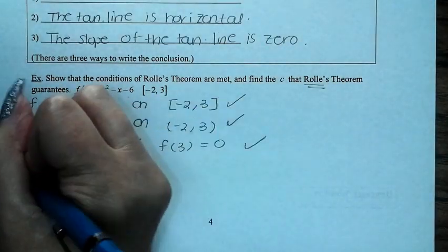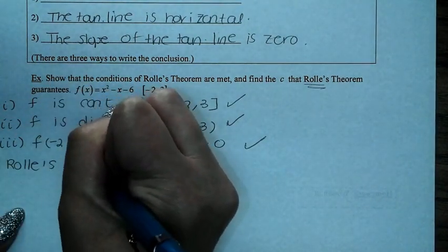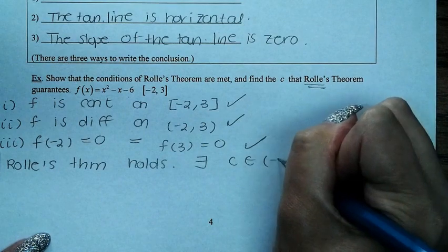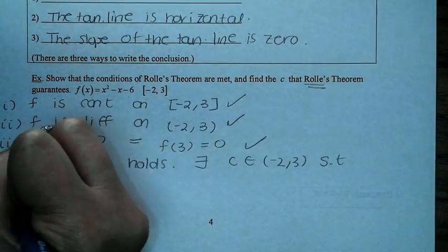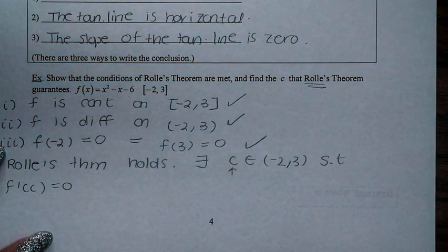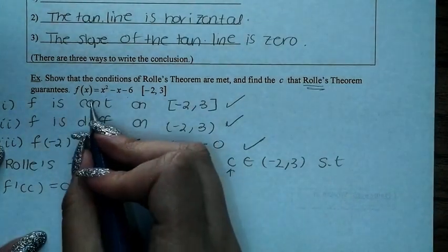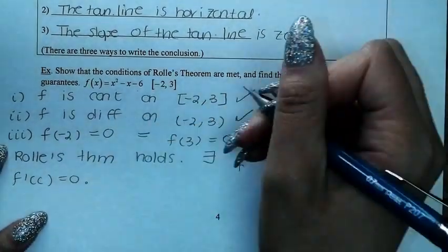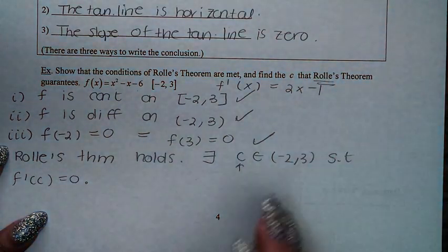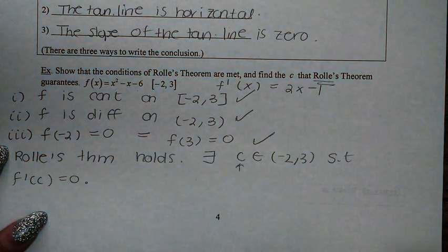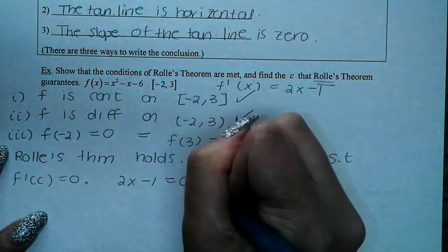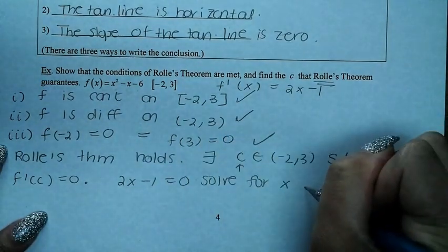Rolle's theorem holds. There exists a number c inside (-2, 3) such that f prime of c equals 0. Now we want to find c. When in doubt, take the derivative. The derivative of f is 2x minus 1. We set 2x - 1 equal to 0 and solve for x. Solving gives x = 1/2. We check that 1/2 is inside the interval (-2, 3) — it is. Therefore, c = 1/2.